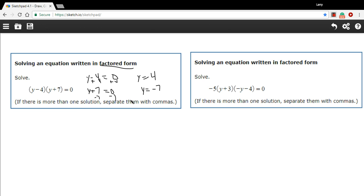And it says if there's more than one solution, separate them with commas. So when you report the answer, you could write it like this: four comma negative seven.